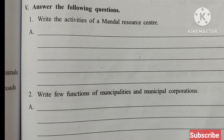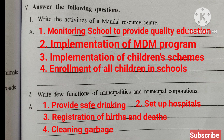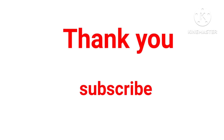Answer the following questions. First: Write the activities of a Mandal Resource Center — monitoring schools to provide quality education, implementation of MDM program, implementation of children's schemes, enrollment of all children in schools. Second: Write the functions of Municipalities and Municipal Corporations — provide safe drinking water, set up hospitals, registration of births and deaths, cleaning garbage. Thank you, if you like this video please subscribe to my channel.